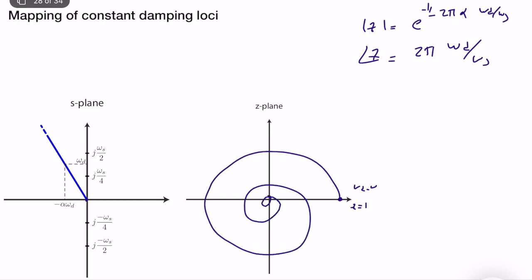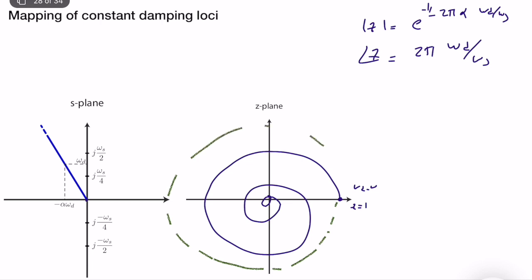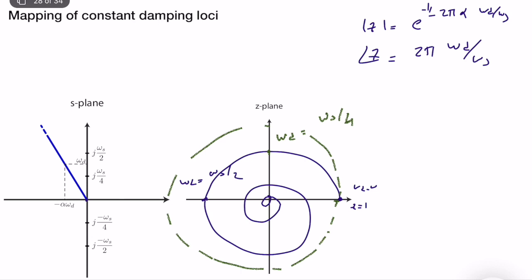The spiral will start at z = 1 and wind inward. Labeling important points: the spiral intersects the unit circle only at z = 1. At omega_d = omega_s/4, omega_d = omega_s/2, omega_d = 3*omega_s/4, and omega_d = omega_s, we can identify specific points along the spiral. As you can see, a fairly simple straight line in the S-plane maps to quite a complex spiral shape in the Z-plane — this is what happens when going from continuous to discrete domain.